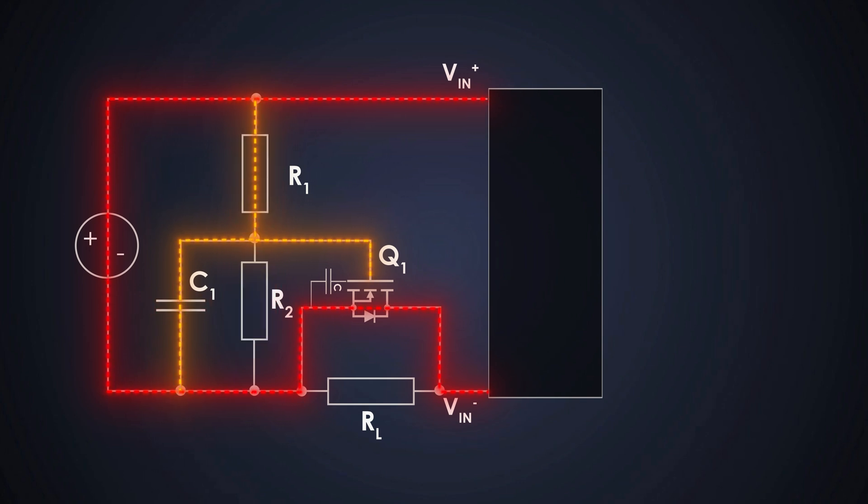The resistor RL sets how much the inrush current is limiting during the startup. We want it to be large enough to reduce the surge, but small enough to let the load start up properly.